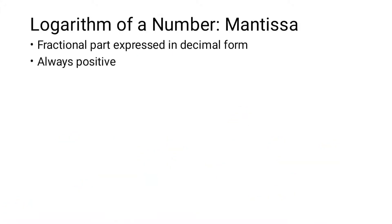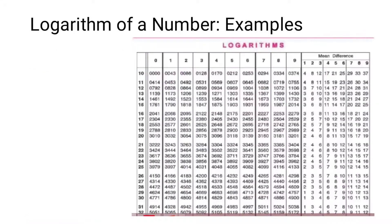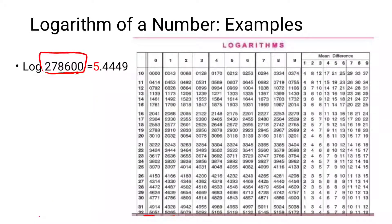Now we come to the mantissa. This is the fractional part which is expressed as a decimal and is always positive. Let us take an example to understand this. We are given a number whose log we have to find. We will consider the first two digits — for example, 27 — and we will look up the value in the log table.